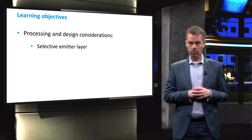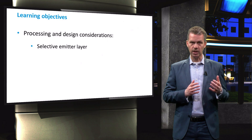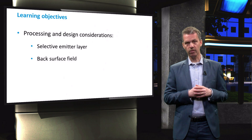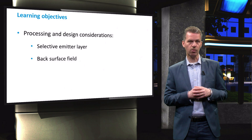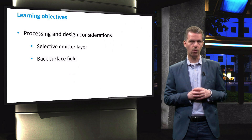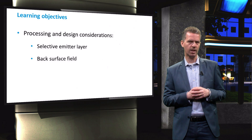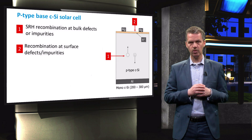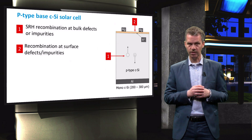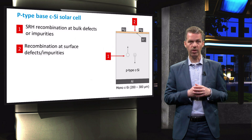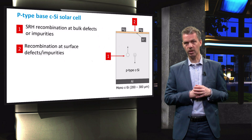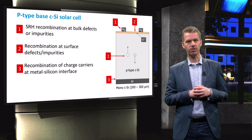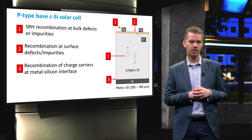We will show how the recombination rate can be reduced by using a so-called selective emitter, and we will focus on the design of the so-called back surface field in order to reduce carrier recombination at the back contact. Considering again the overview presented in the previous video, we will continue with point 2, surface recombination, and then point 3, the recombination of charge carriers at a metal-silicon interface.